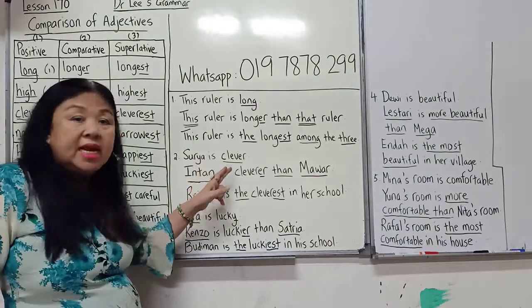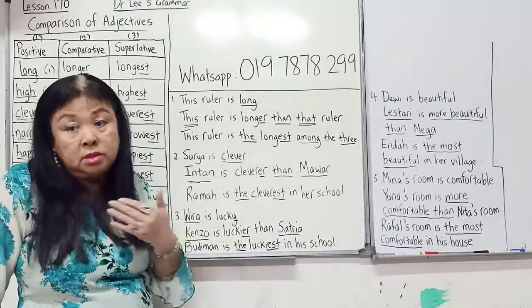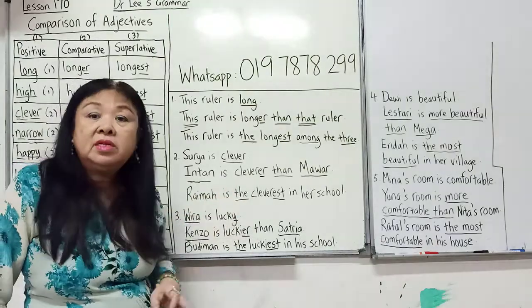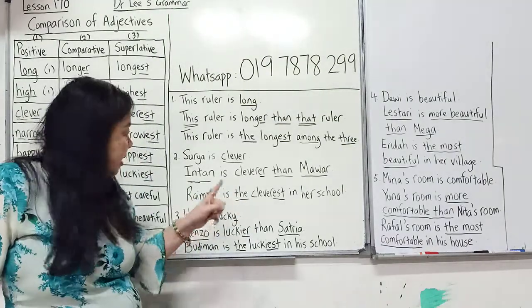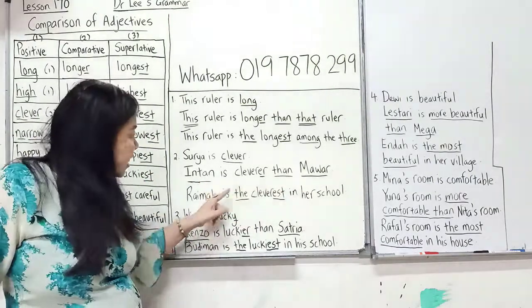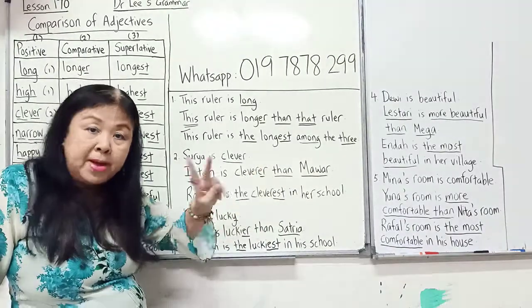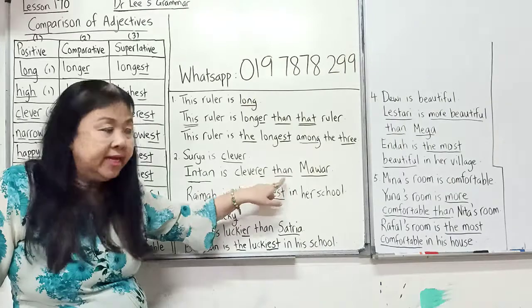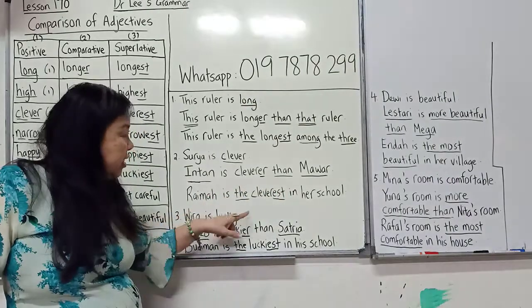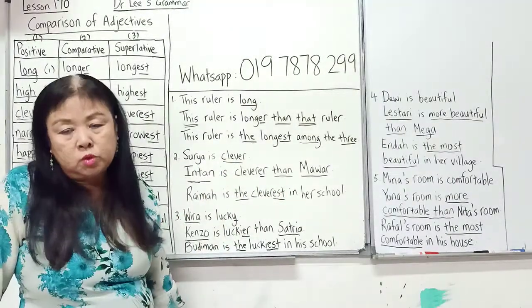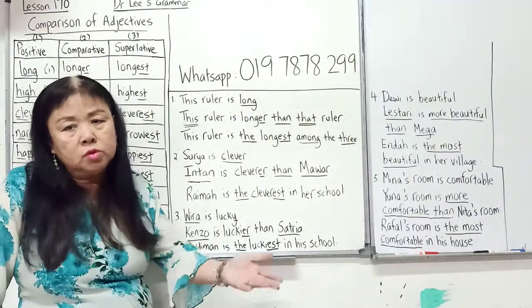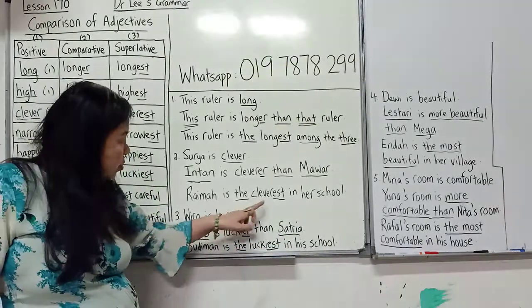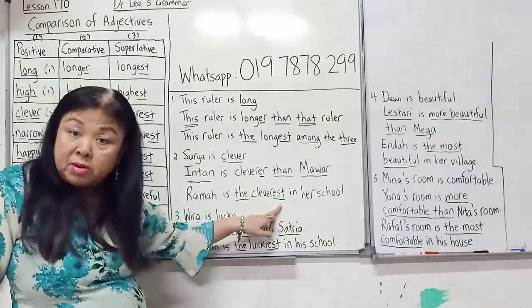Surya is clever — no comparison, it's just Surya herself. Intang is cleverer than Mawar — two persons, comparison between two, so you use ER. Raima is the cleverest in her school — your school has more than three people, so you use the with EST.